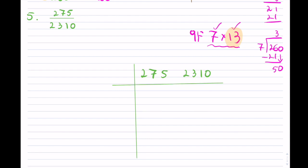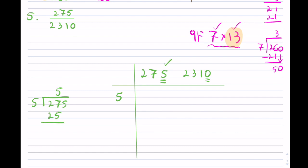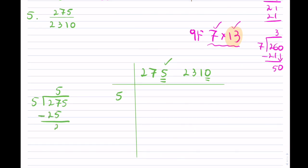The process: pick the smaller number and check which prime goes into it. I right away see that 275 ends in 5 and 2310 ends in 0, so 5 will definitely work for both. 5 into 275: 5 into 27 goes 5 times, subtract to get 2, bring down the 5, and that gives 55.